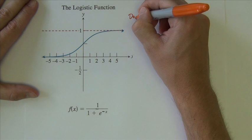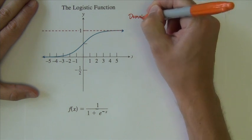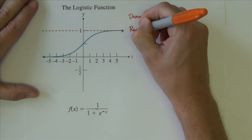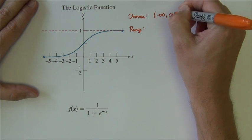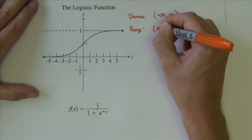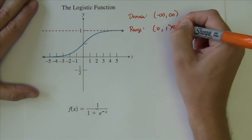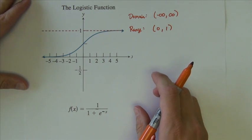Some information about it, its domain and range. Domain is negative infinity to infinity, and its range 0 to 1, not inclusive on those endpoints.